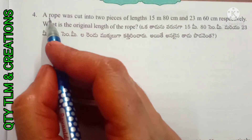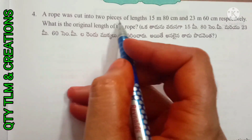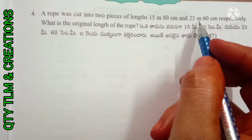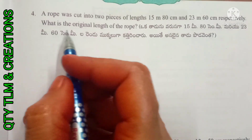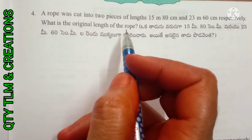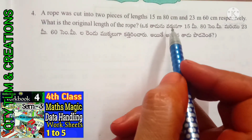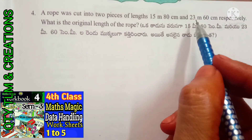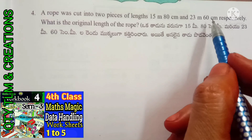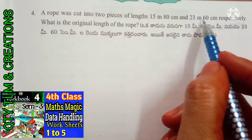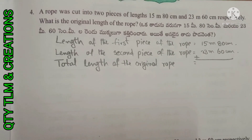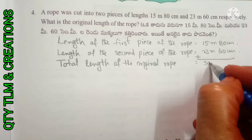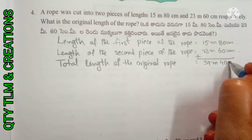Next question: A rope was cut into two pieces of lengths 15 meter 80 centimeter and 23 meter 60 centimeter respectively. What is the original length of the rope? Length of the first piece equals 15m 80cm. Length of the second piece equals 23m 60cm. Total length of the original rope equals 39 meters 40 centimeters.